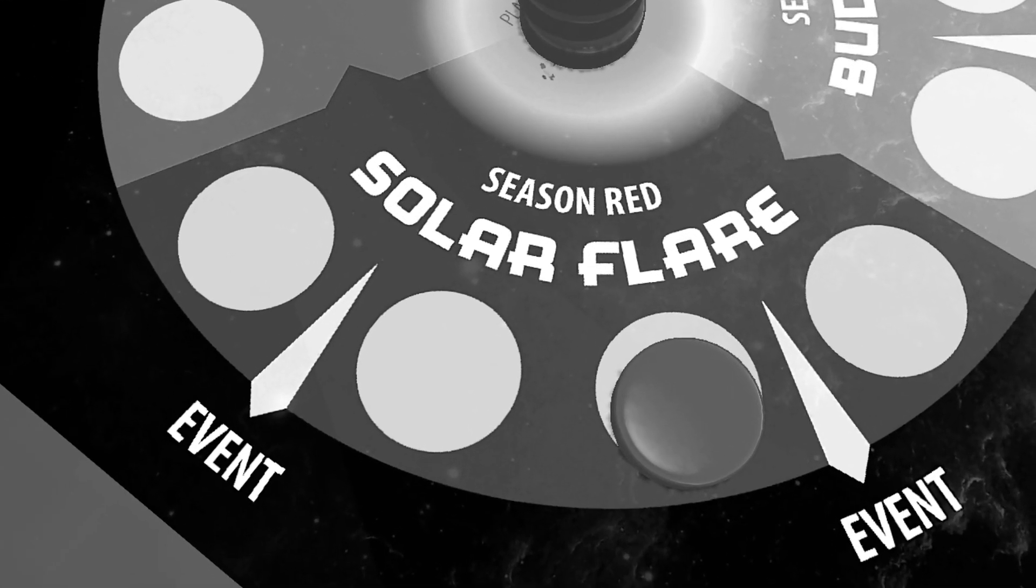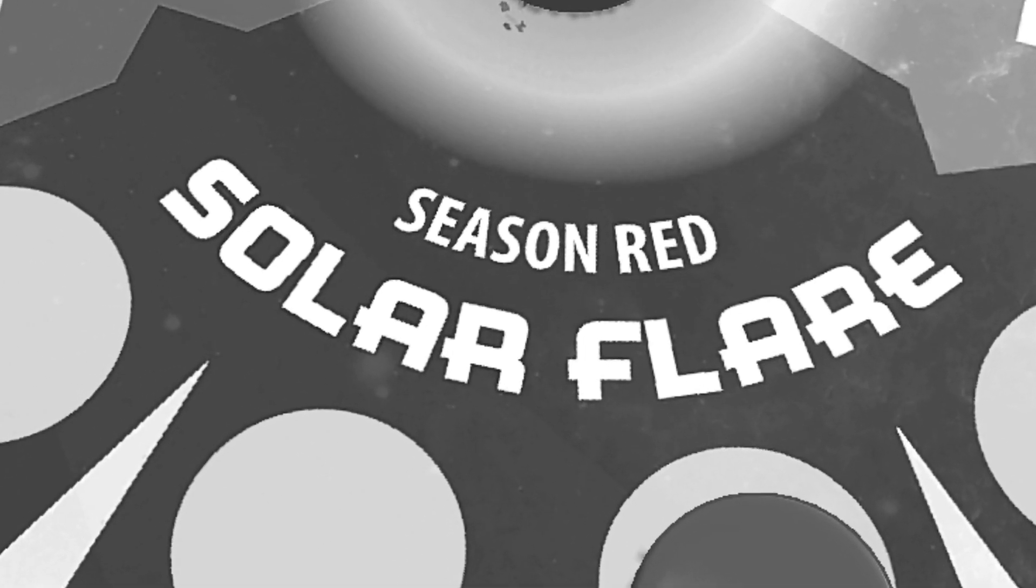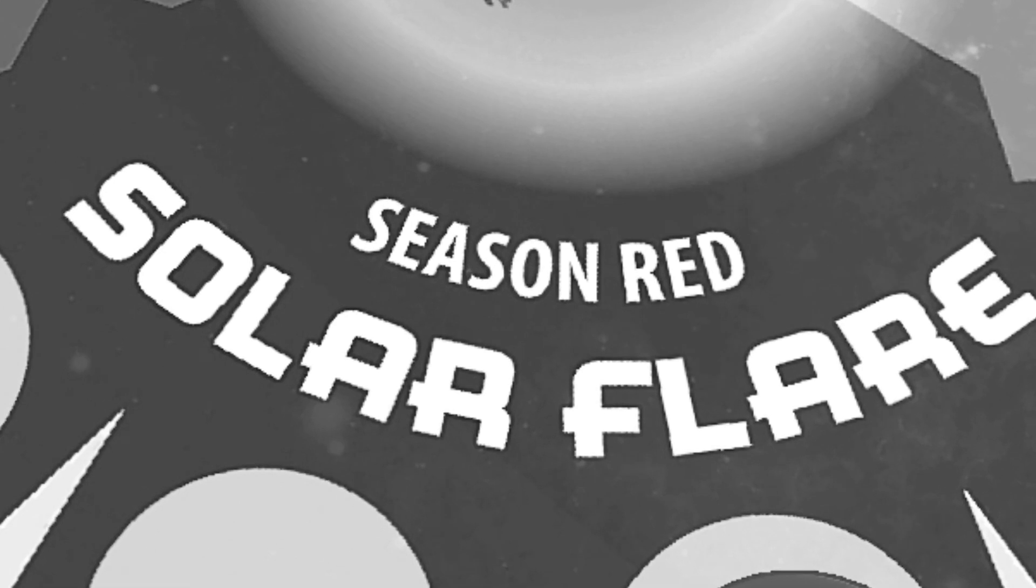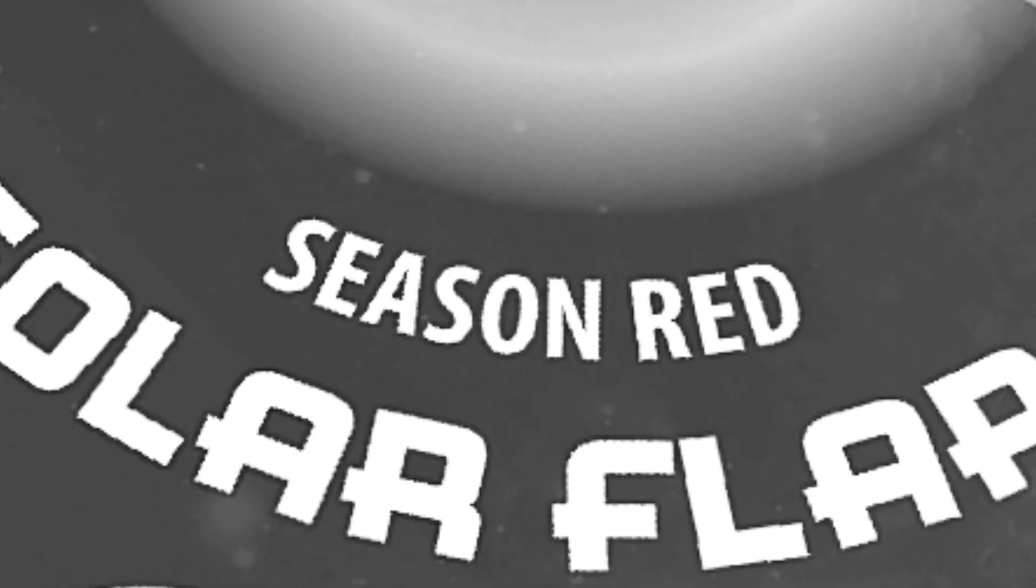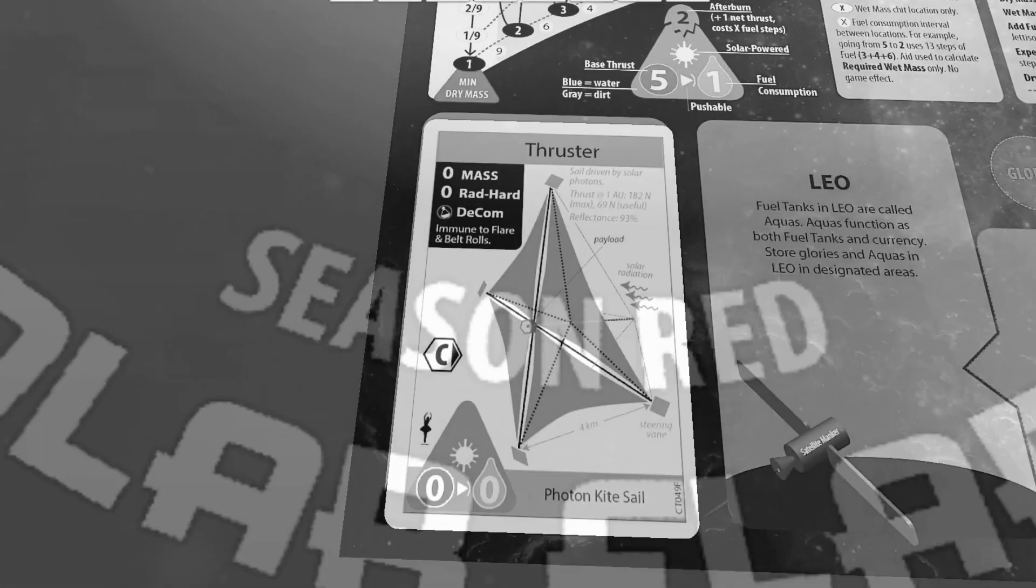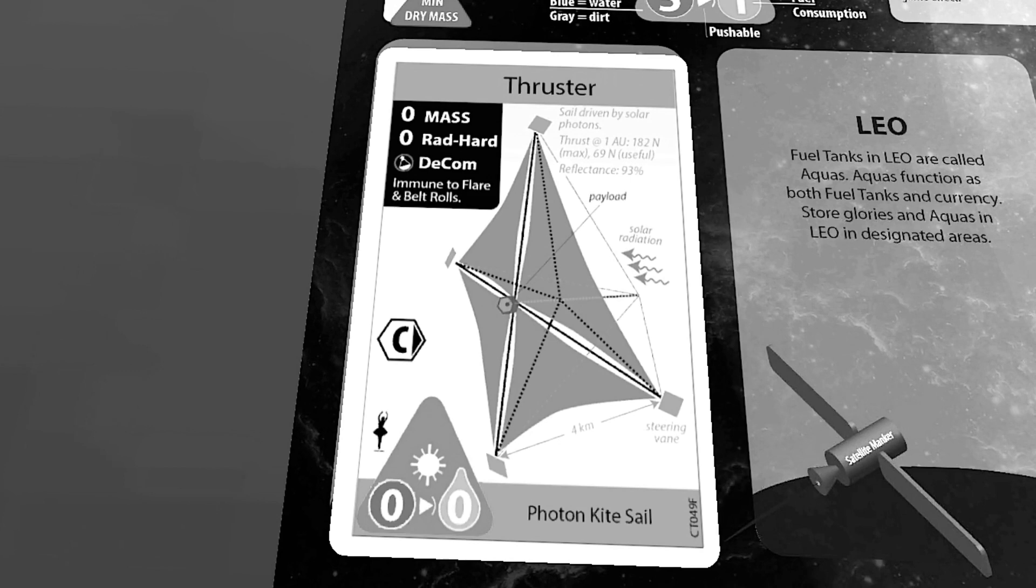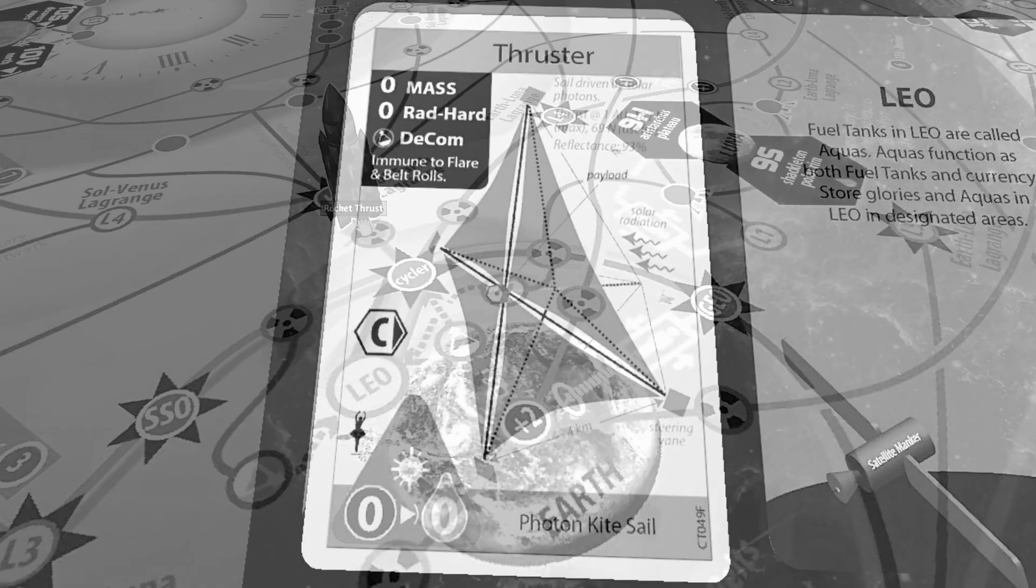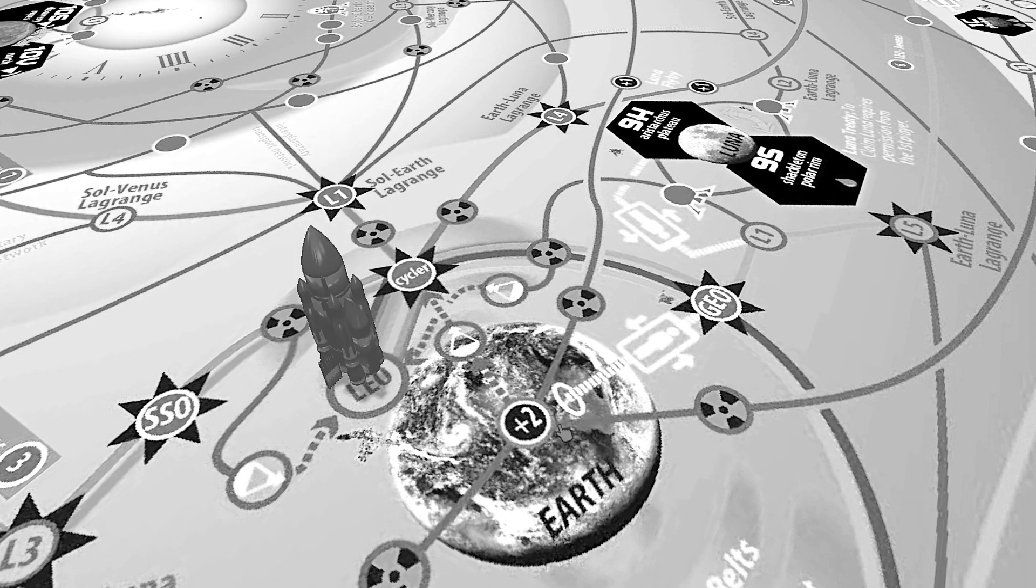Almost everything would have survived if it wasn't season red. Bad timing and planning on my part. Heads will probably roll over this. It is a sad, tragic day for the ESA. The thruster—the photon kite sail—is immune to flare and belt rolls, and so it continues its lonely way home to low Earth orbit.